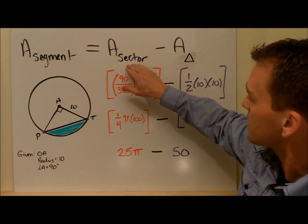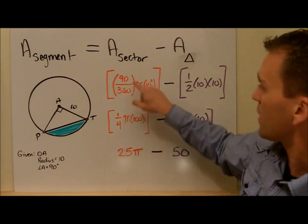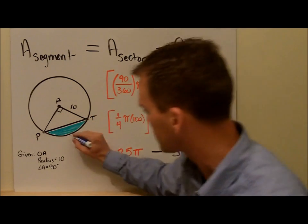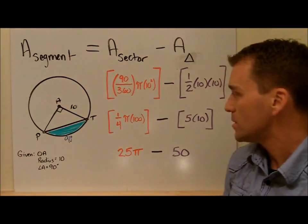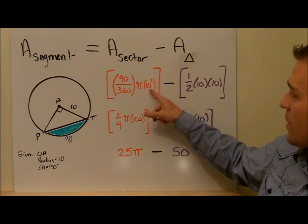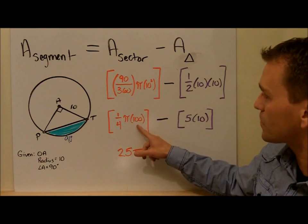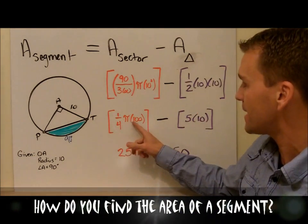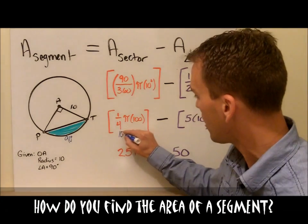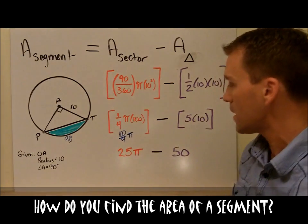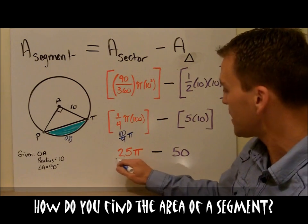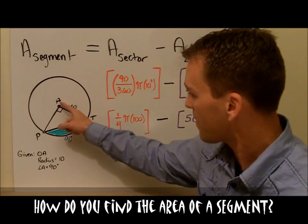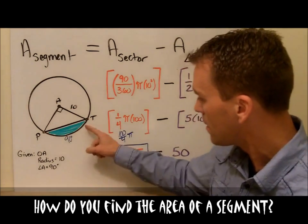The area of the segment equals the area of the sector. To find that, we take the measure of the arc over 360 times π r². The arc measure is 90 because the central angle is 90, so we get 90 over 360 times π times 10 squared. 10 squared is 100, and 90 over 360 reduces down to one-fourth, so one-fourth times π times 100 gives us 100 over 4 π, which is 25π. So 25π represents the area of this sector.